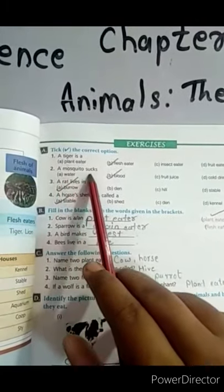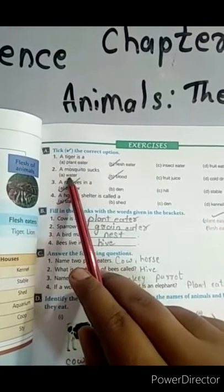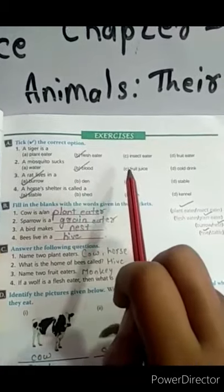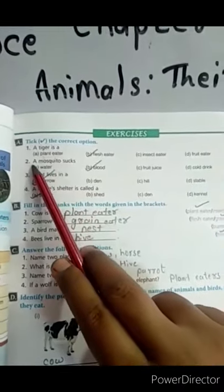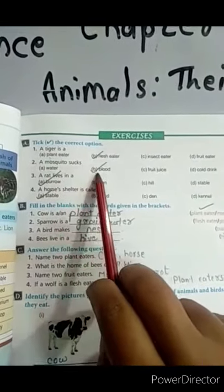A mosquito sucks: Option A water, Option B blood, Option C fruit juice, Option D cold drink. And the right answer is a mosquito sucks blood.